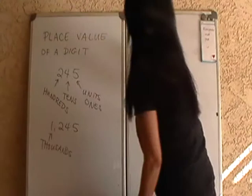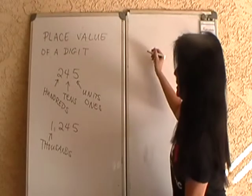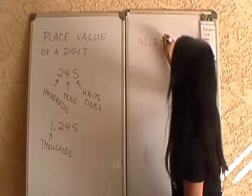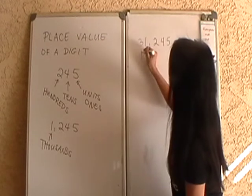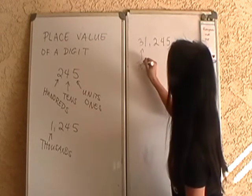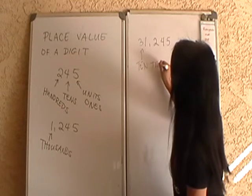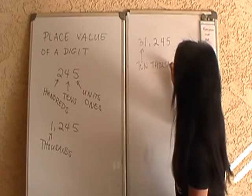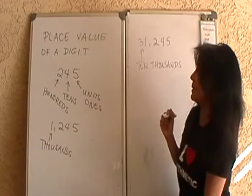Continuing, if I have, let's say, 31,245, then 3 here occupies the tens thousands place. That's tens thousands place.